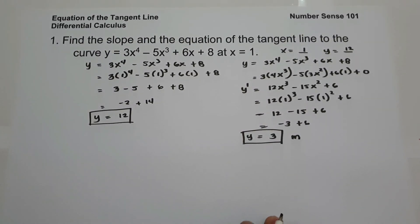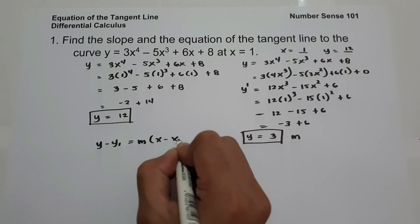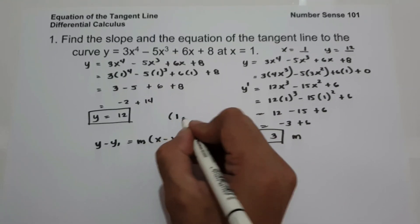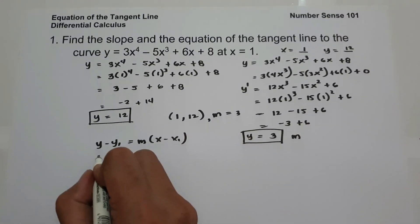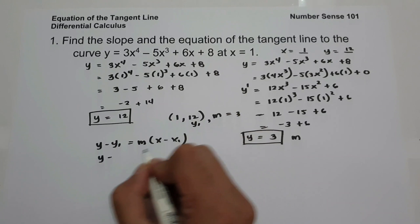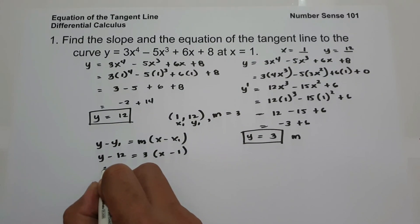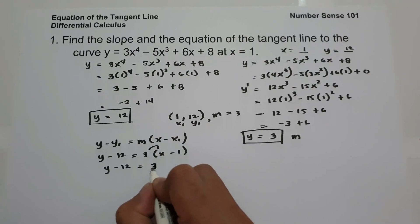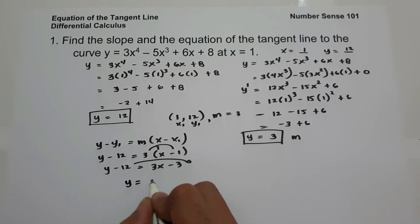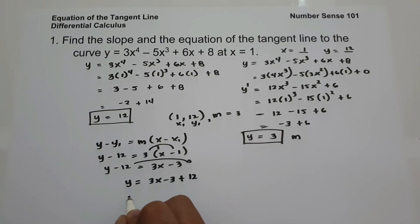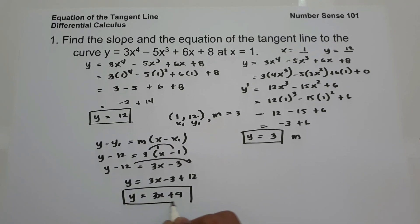To find the equation of the tangent line, we use point-slope form: y minus y₁ equals slope times x minus x₁. With x₁ = 1, y₁ = 12, and slope = 3, we have y minus 12 equals 3 times (x minus 1). So 3 times x is 3x, and 3 times negative 1 is negative 3. Moving negative 12 to the other side gives y equals 3x minus 3 plus 12, so y equals 3x plus 9. This is the equation of the tangent line.